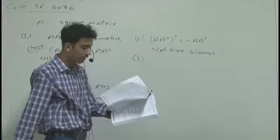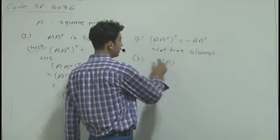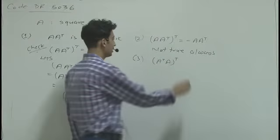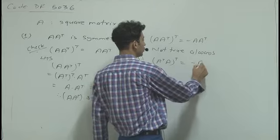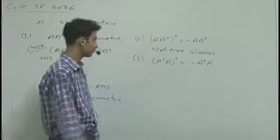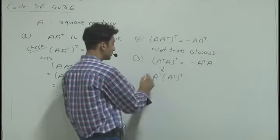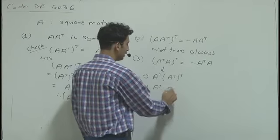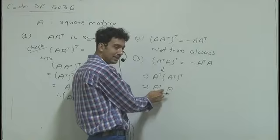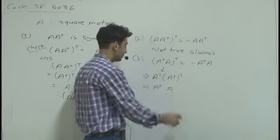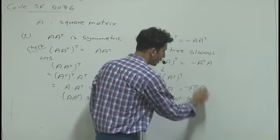For the third option, we check if A transpose A is a skew symmetric matrix. To show this, we would need A transpose A whole transpose equal to negative times A transpose A. Taking LHS, A transpose A whole transpose can be written as A transpose multiplied with A, which is not equal to negative A transpose A. So LHS is not always equal to RHS, and the third option is not correct.